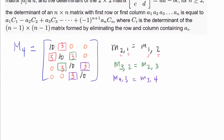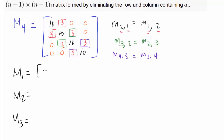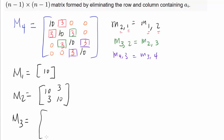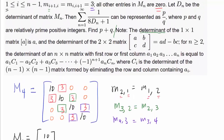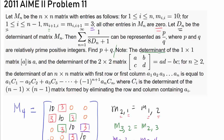Using the same reasoning, it's very easy to find M sub 1, M sub 2, and M sub 3. M sub 1 is just [10]. M sub 2 is [[10,3],[3,10]]. Notice M sub 2 appears right there inside M sub 4. M sub 3 has 10s on the diagonal, 3s on the super- and sub-diagonals, and zeros elsewhere — and M sub 3 is located in the top-left part of M sub 4. Now, let D sub n be the determinant of the corresponding matrix M sub n. We wish to evaluate the summation from n equals 1 to infinity of 1 over (8 times D sub n plus 1).